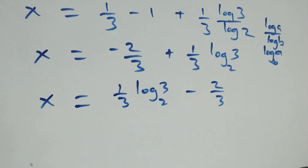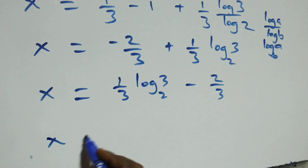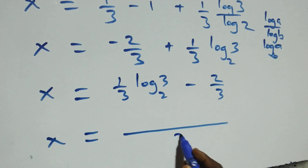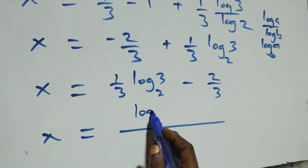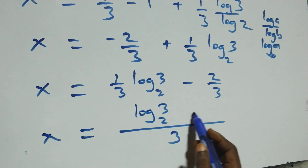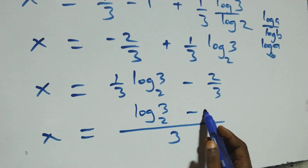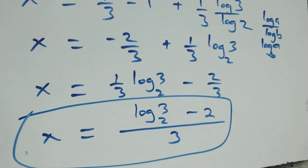So here we have the value of x in this problem as log 3 base 2 minus 2, all over 3. That is, x equals log₂3 minus 2, all divided by 3.